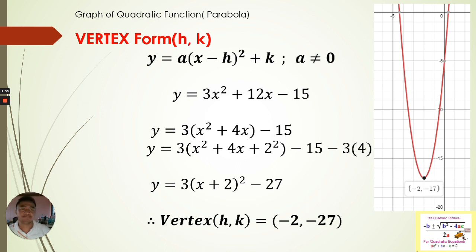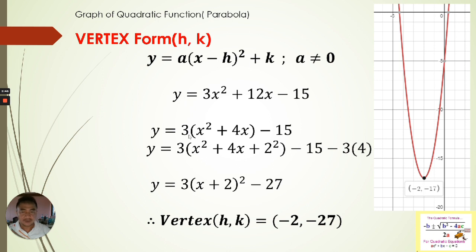Our first quadratic function is y = 3x² + 12x − 15. We're going to apply completing the square to figure out the vertex. Since we have a leading coefficient of 3, we need to factor that out first, giving us 3(x² + 4x) − 15.